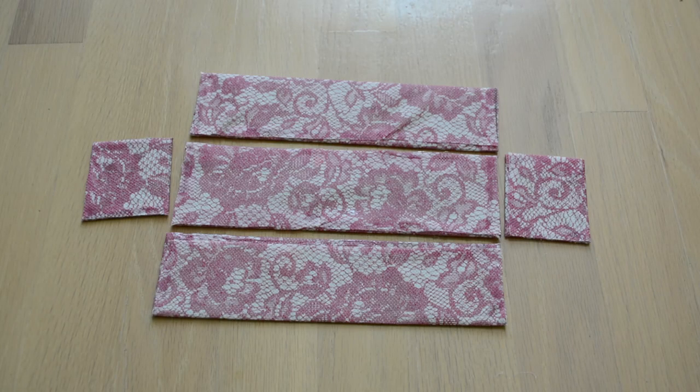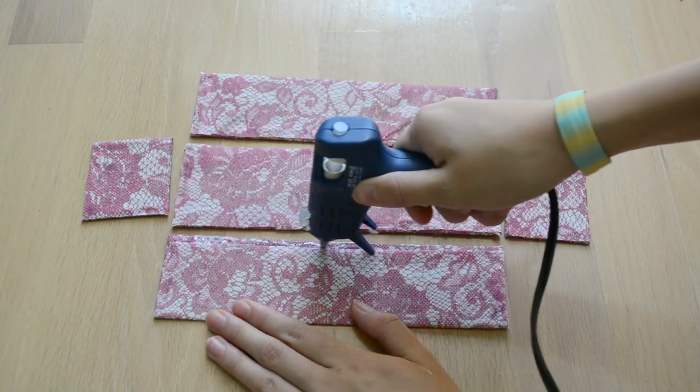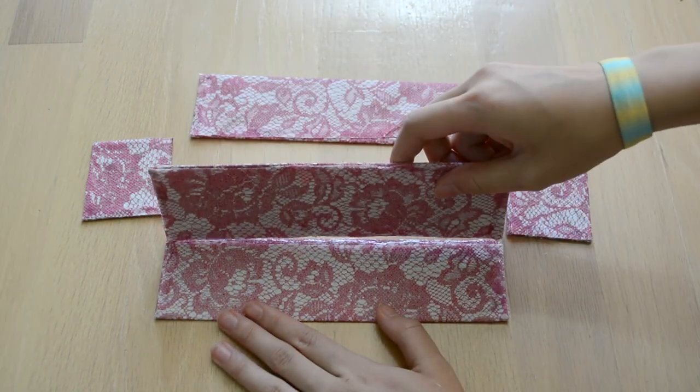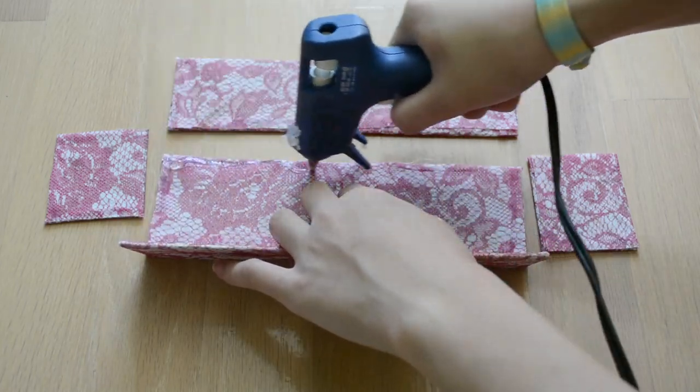When all your pieces of cardboard are covered, you can finally put your bin together. So when you're gluing the bin together, make sure you press hard on the pieces so that your bin doesn't fall apart.